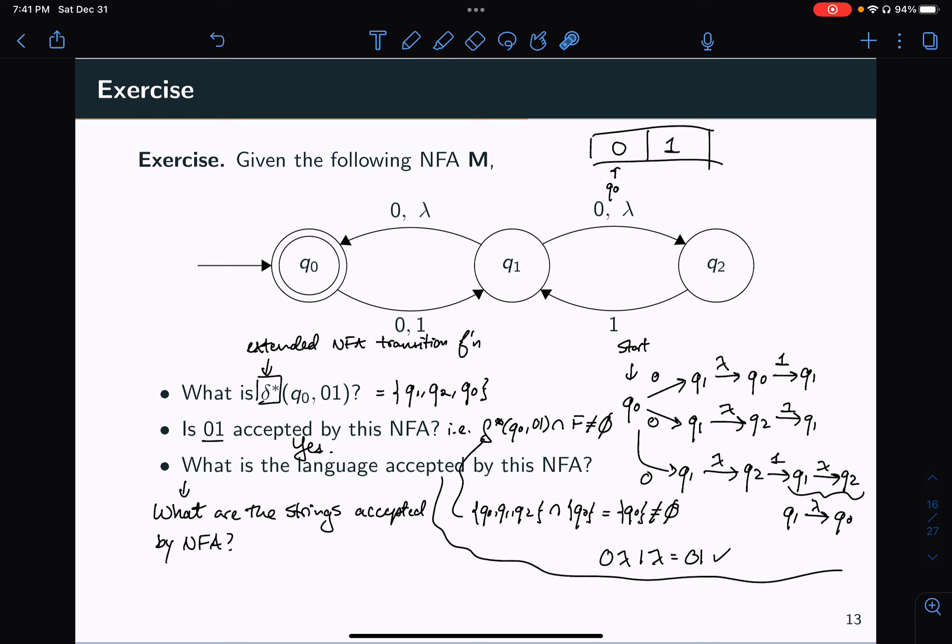Otherwise, if I'm not done, I read the next symbol, I go to Q1, and then I use the lambda transition to go back to Q0. So in fact, what this is kind of simulating, it's kind of just simulating the DFA with a single accept state that has a self loop.